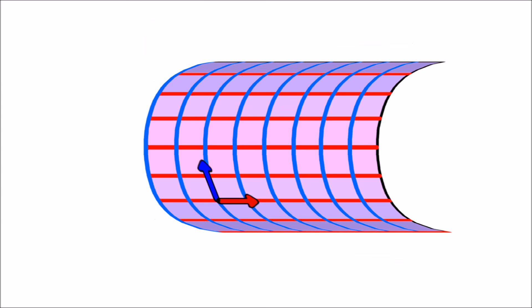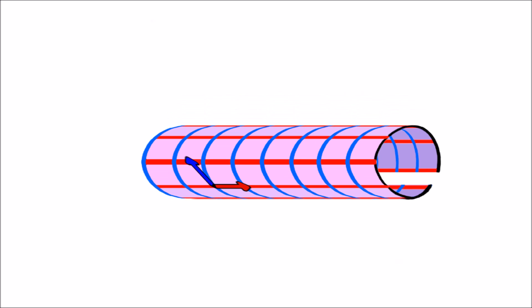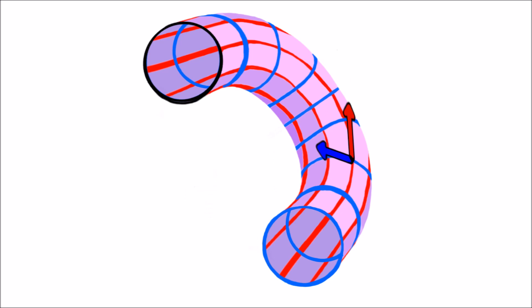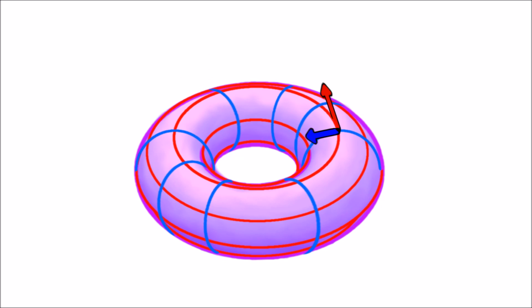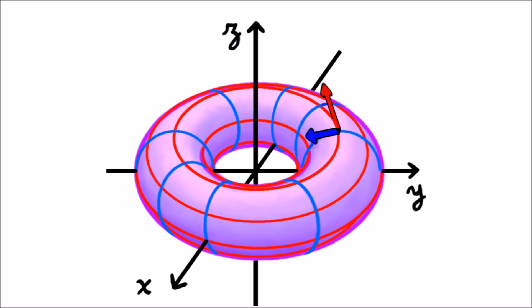The matrix tells you what this parametrization does to vectors based at points in the domain. It might stretch them or squash them or point them in one direction or another as it places them on the torus. But in general, if you want to know what a parametrization is doing to a certain vector, just ask the matrix of derivatives.